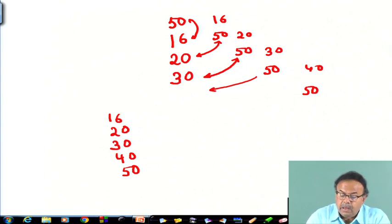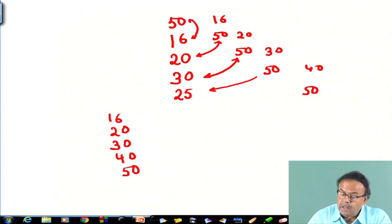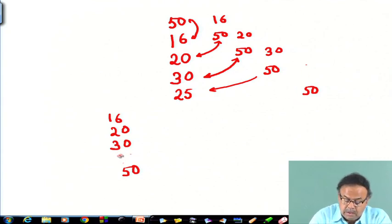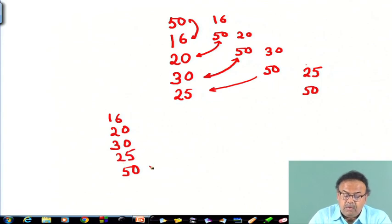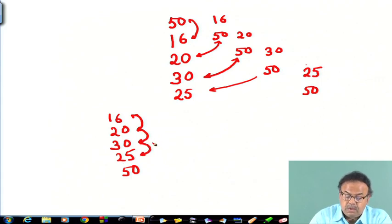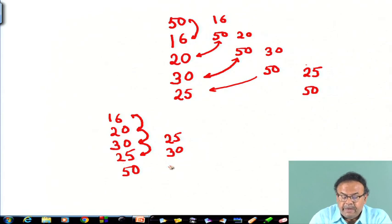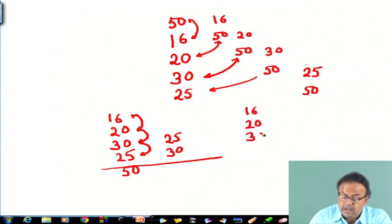Suppose instead the fourth element is 25. After swaps, the array becomes 16, 20, 25, 50 in that region and 50 settles. Then in the next iteration restricted to the remaining part: comparing 25 and 30 — heavier is in place; no issue. Then 25 and the next element: 25 comes here and 30 being heavier goes there.